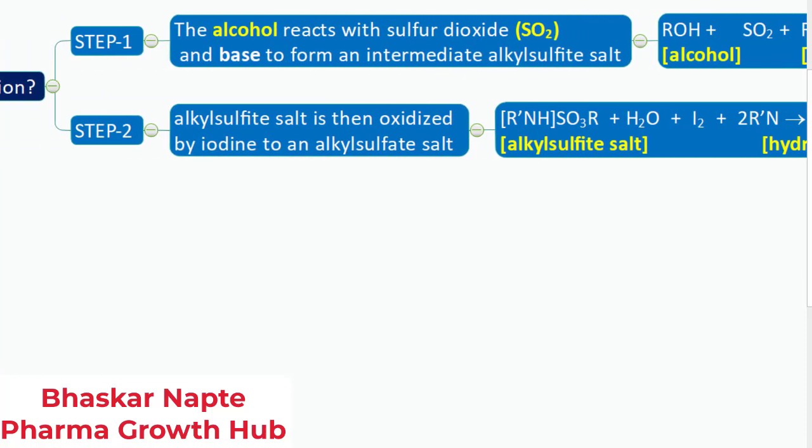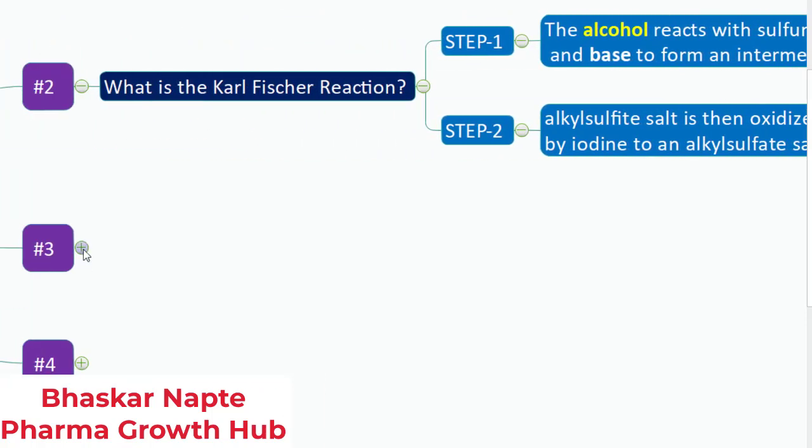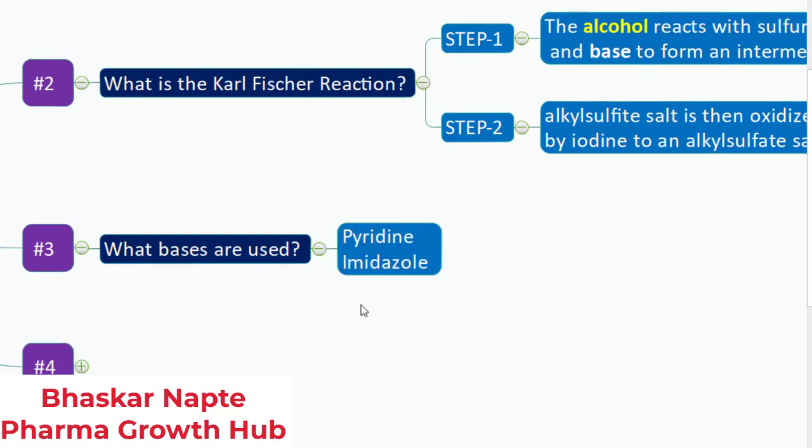We will talk about the base requirement. Generally, earlier pyridine was a very popular base used in the preparation of Karl Fischer reagent, but afterwards it was found to be carcinogenic in nature. It is toxic and hazardous, and because of that pyridine got replaced by imidazole. So imidazole is primarily the base used for the manufacturing of the Karl Fischer reagent.